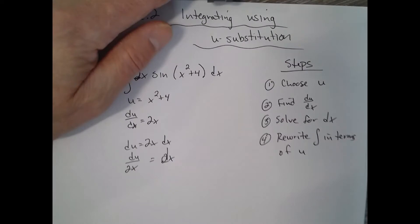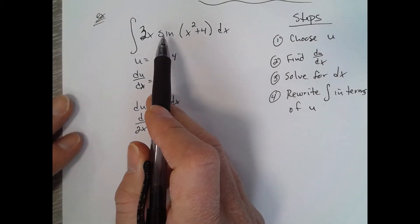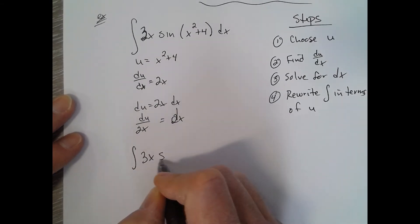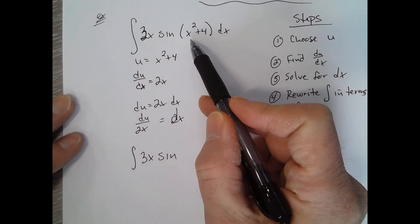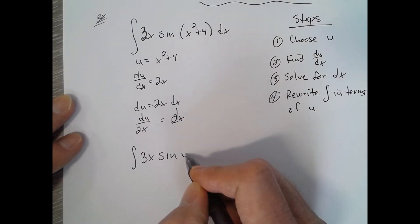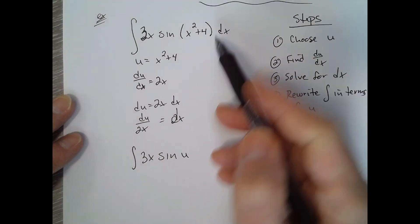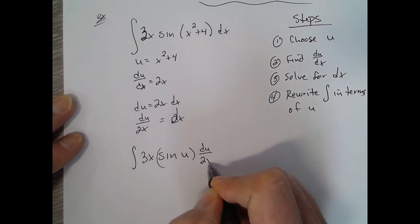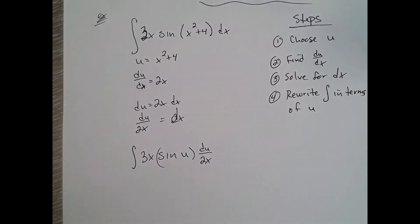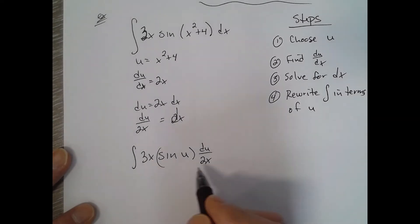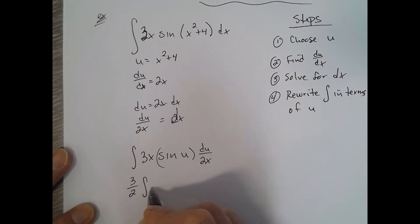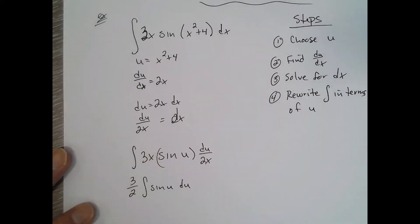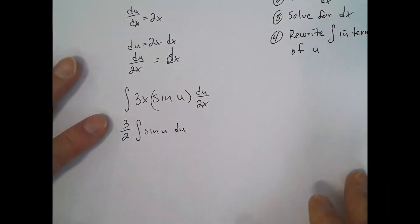So right now we're going to take this integral and write it in terms of u, so it's now the integral of 3x, the sine of u, and dx is du over 2x. Now if we did it right and we chose the correct u, the x's should disappear. You notice I have 3x over 2x, the x's cross off, I'm going to toss the three halves out front, and I have the integral of sine of u du.